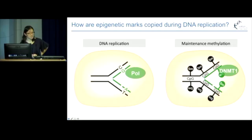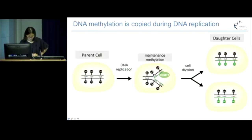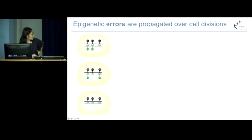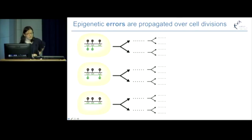We call this process maintenance methylation, because we are maintaining the methylation from the parent strand onto the new strand. So putting this back in context of cell division: the parent cell undergoes DNA replication and maintains methylation to copy its methylation marks. If everything goes correctly, you end up with two daughter cells that have exactly the same methylation marks as the parent cell. But if copying isn't completely accurate, you may end up with daughter cells that are slightly or completely different from the parent cell. These daughter cells then go on to divide again and again, and like a game of Chinese whispers, these errors in the epigenetic marks are copied to subsequent daughter cells.